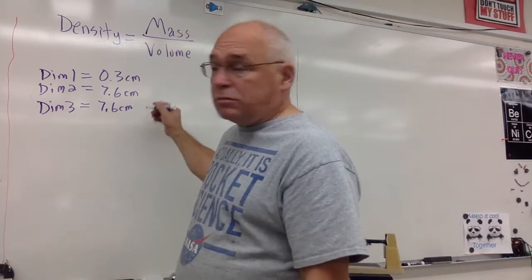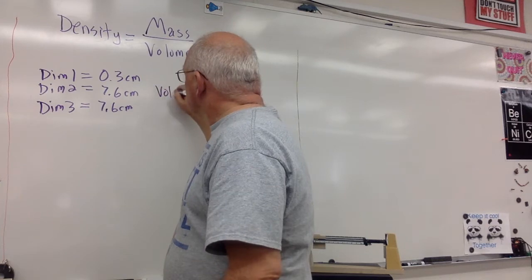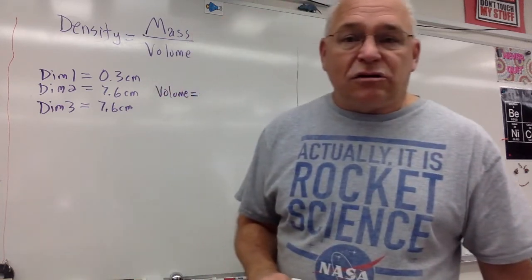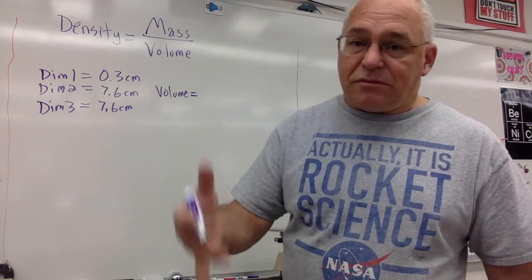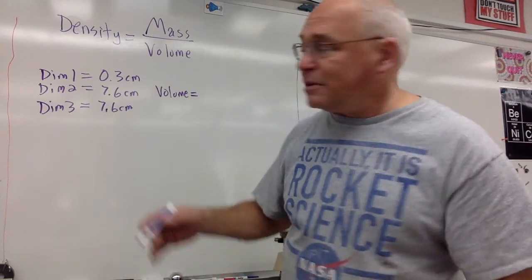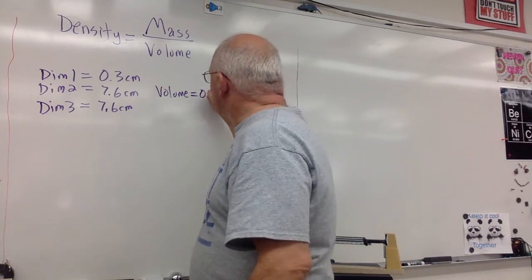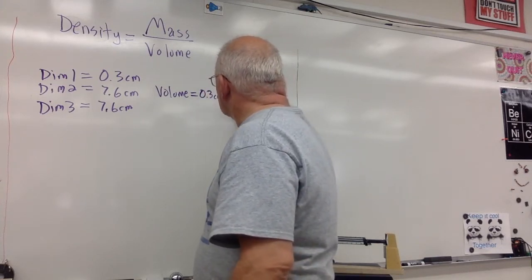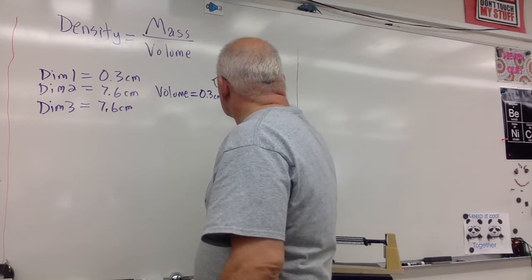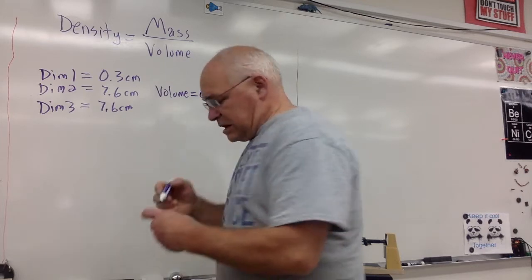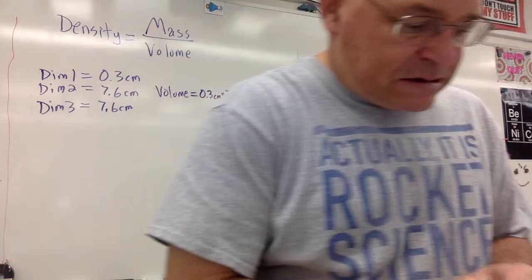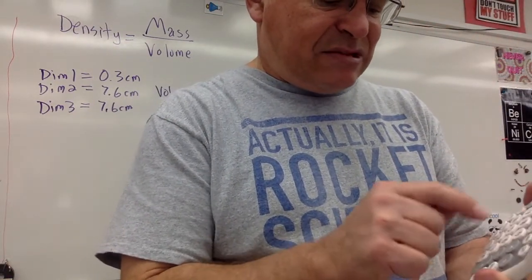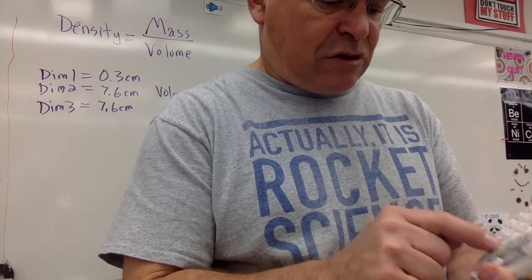So what is the volume? The volume of a rectangular prism is the length times the width times the height, the three dimensions, whatever you want to call them, multiplied together. And if we do that, what do we get? Got my trusty Texas Instruments here. 7.6 times 7.6 times 0.3. What do we get?